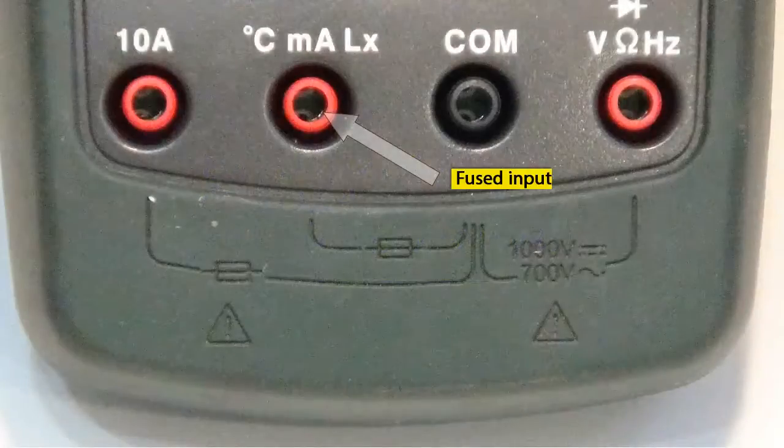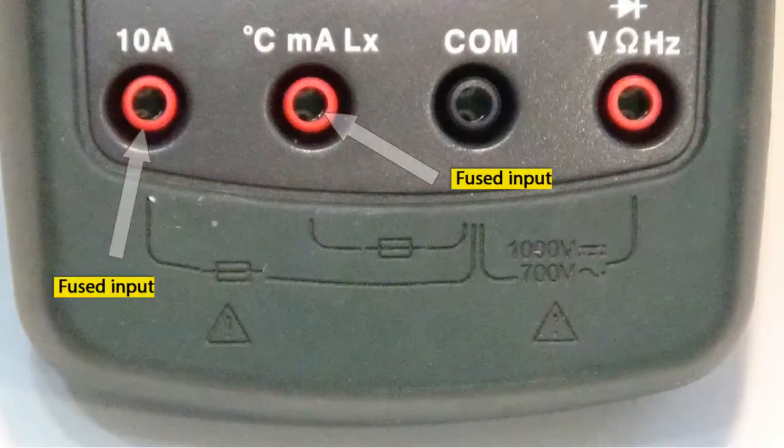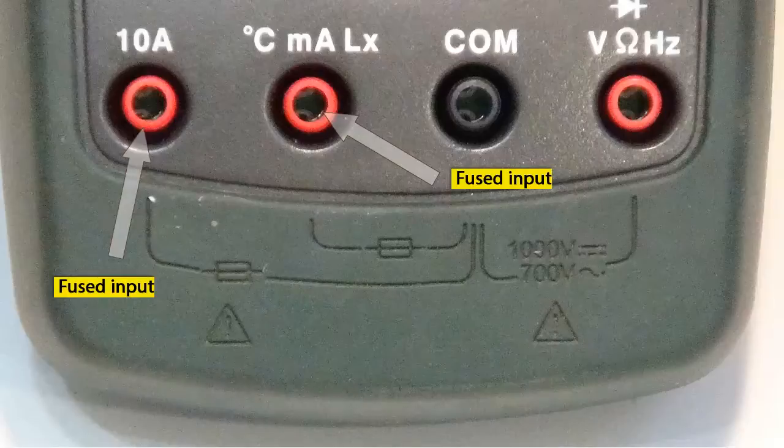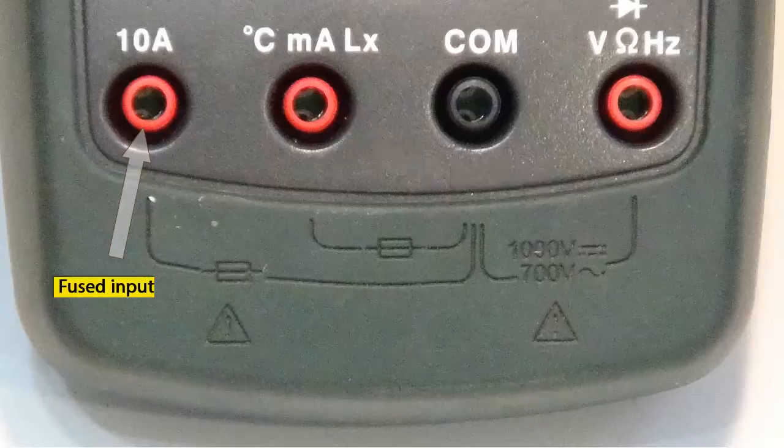Most digital multimeters have the current inputs fused. These are always clearly labeled. Sometimes they give you the fuse rating, sometimes they just show the symbols of the jacks that are fused.